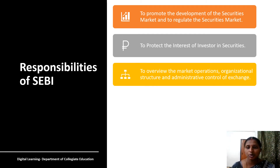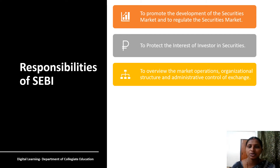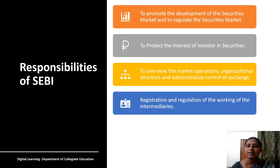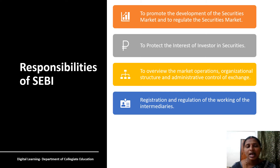The next responsibility is to oversee the market operations, organizational structure, and administrative control of exchanges. In India, we have various stock exchanges like BSE and NSE, and SEBI has a responsibility to look after the organizational structure of these exchanges and to control their activities. The next responsibility is registration and regulation of the working of intermediaries. In the capital market, we have several intermediaries like brokers, sub-brokers, merchant bankers, and so on. SEBI has a responsibility to register all these intermediaries as well as to control their working.